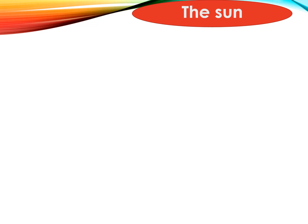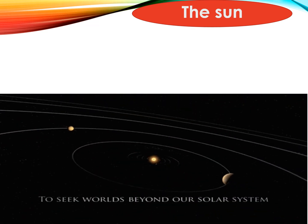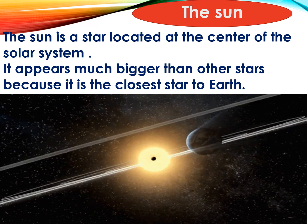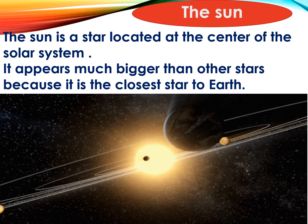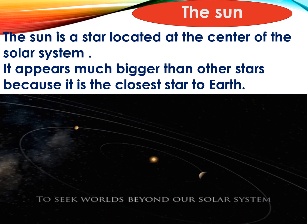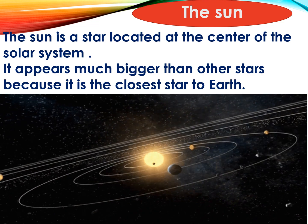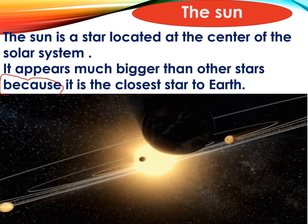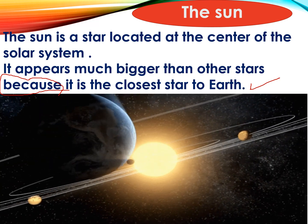Here, we will speak about the sun. What is the sun? As you can see in this picture, the sun is at the center of the solar system. It appears much bigger than other stars because it is the closest star to the Earth. Why does the sun look bigger than other stars? Because it is the closest star to the Earth.